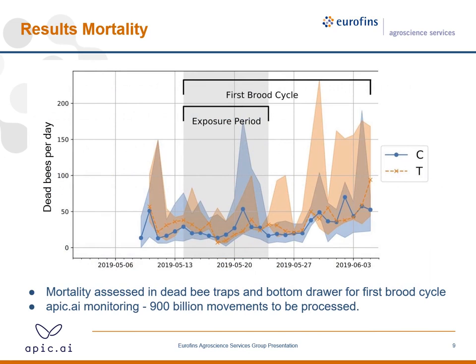Now to the mortality. Our aim was to show there is no lethal effect. In the graph, the orange line shows the mean mortality of the treatment and the blue line shows the mean mortality of the control. The shaded areas show the minimum-maximum range. There is a nice overlap until the end of the feeding, where there is a higher mortality in the control, and after feeding there is a slightly higher mortality in the treatment, but none of the differences were significant.